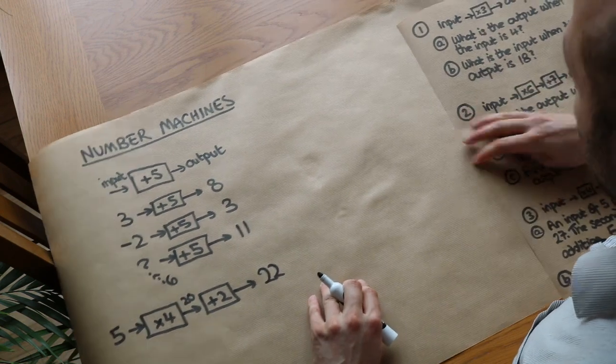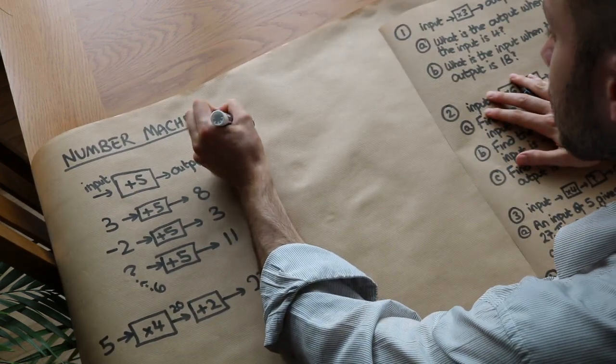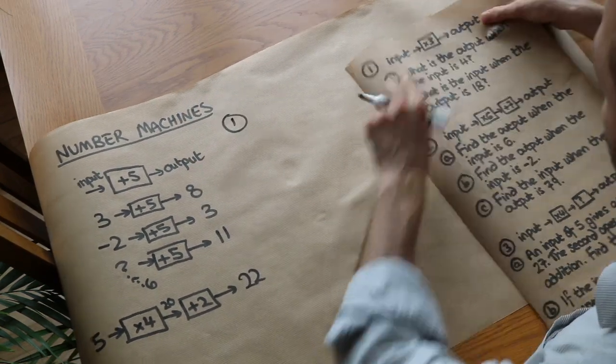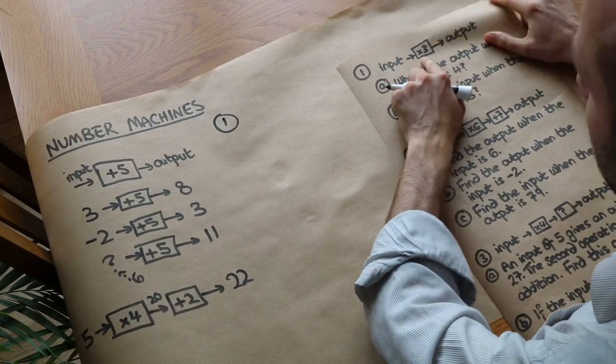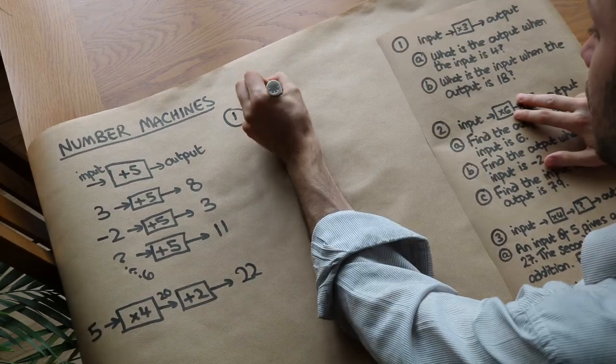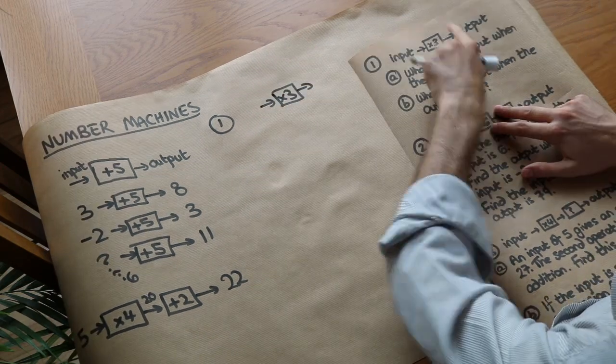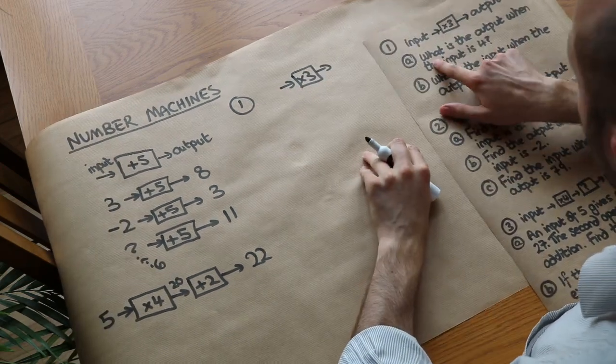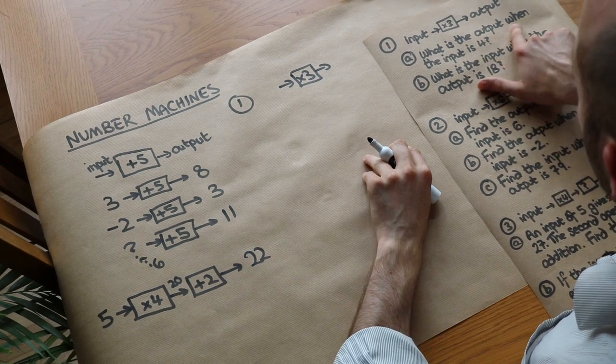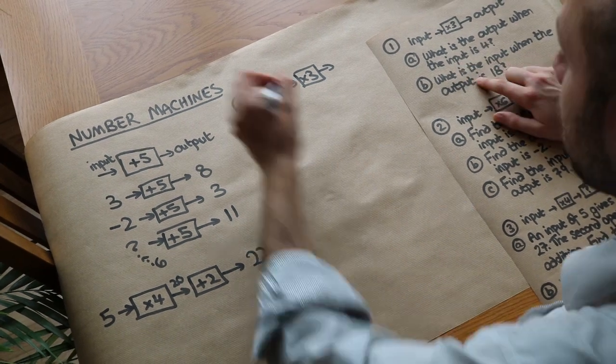Now let's do some exam style questions to practice this. We got this first question. We got the input, the number machine is timesing by 3, so we got times by 3 and then it spits out some output. And the first question is, what is the output when the input is 4?